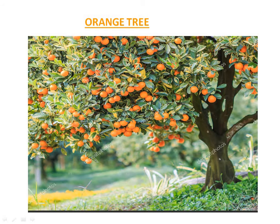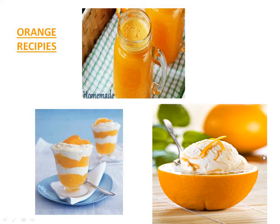Let us see the orange tree. You are seeing the image here — this is an orange tree, and there are many oranges on it. These are orange fruit recipes: orange juice, orange ice cream, orange smoothies, and many more recipes are prepared from oranges.